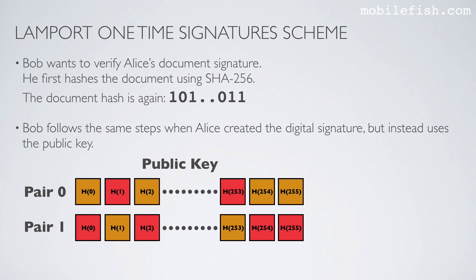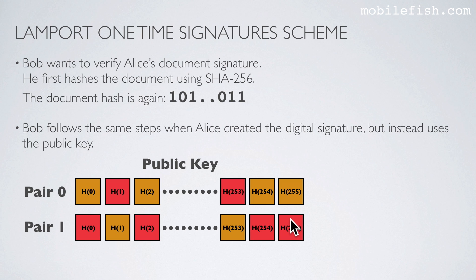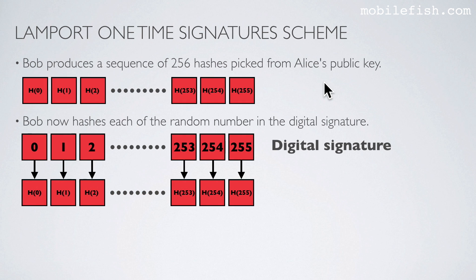Bob wants to verify Alice's document signature. He first hashes the document using SHA-256. Bob follows the same steps Alice used when creating the digital signature, but instead uses the public key. He starts with bit number 0 — value 1, so he looks at pair 1 and selects that hash number. Bit number 1 has value 0 — he looks at pair 0 and selects that hash number. Bit number 255 has value 1 — he looks at pair 1 and selects that hash number. Bob produces a sequence of 256 hashes picked from Alice's public key.